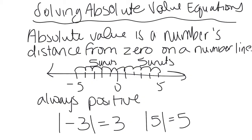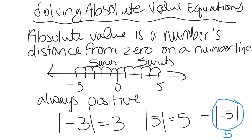The absolute value sign cannot be distributed across like parentheses. So when you see a negative absolute value of negative five, you first take the absolute value of negative five — which is five — and then multiply by negative one, giving a final answer of negative five.